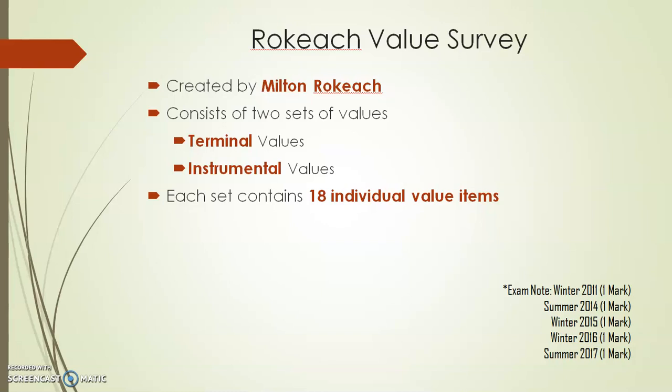The first is terminal values and the second is instrumental values. Each set contains 18 individual value items. That means there are 18 terminal values and 18 instrumental values, which together encompass the whole of a person's character and personality.